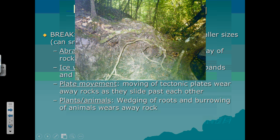Another example is plants and animals. Whether they are burrowing animals, or like you see in this picture, tree roots digging into the rocks and breaking them apart — these are all different ways that weathering can occur.